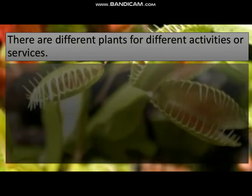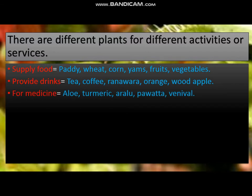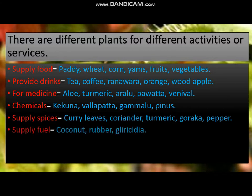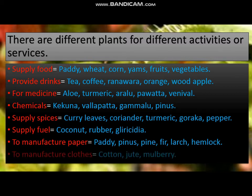There are different plants for different activities. Supply food: paddy, corn, yams, fruit and vegetables. Provide drinks: tea, coffee, orange. For medicine: turmeric, and other medicinal plants. Supply spices: curry leaves, coriander, turmeric, and pepper. Industrial crops: coconut, rubber. To manufacture paper: pine, fir, and other timber trees. To manufacture clothes: cotton, jute and mulberry.